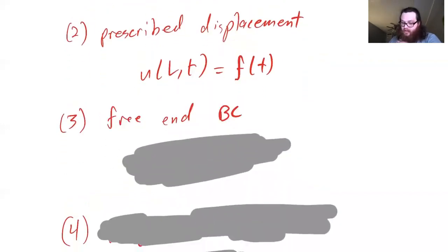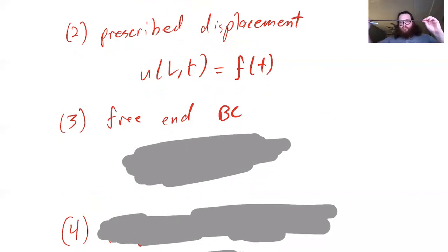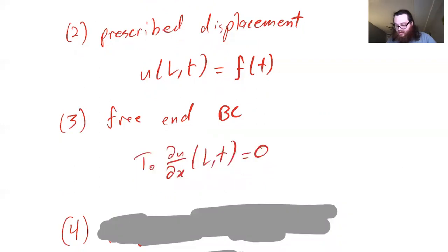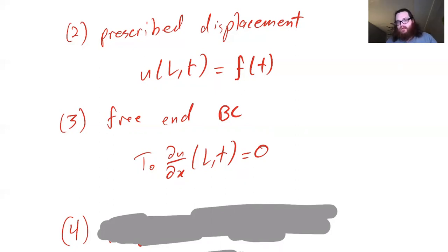Another condition is a free end boundary condition. Maybe like a ruler: pull it down on one end and let it vibrate — this end is free. Mathematically, we treat this as the tension or force acting on the end of the string being zero.